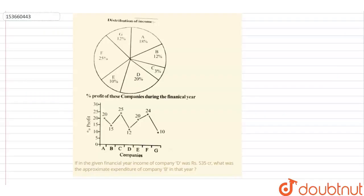Let's have a look at this question, guys. In this question, there is one pie chart of distribution of income of different companies A, B, C, D, E, F, G and percentage profit out of this company from this income of this financial year has been given. And the question is, if in the given financial year, income of the company D was 535 crores, what was the approximately expenditure of the company B in that year?